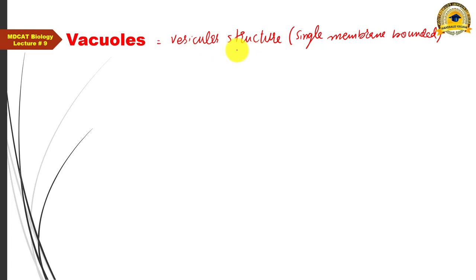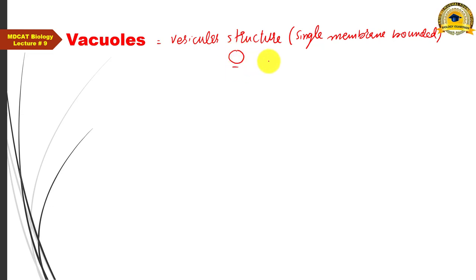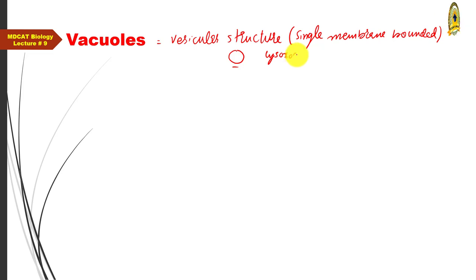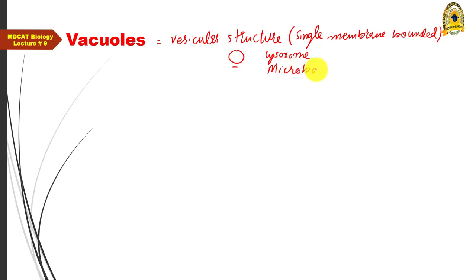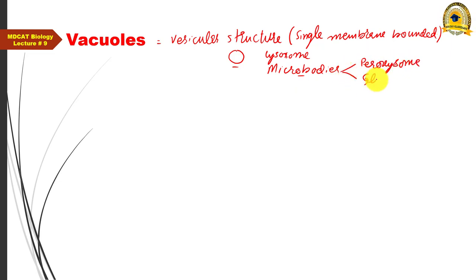Vacuoles are vesicular structures — that is, they are single membrane-bounded structures. These vesicular structures are generally shown as a spherical sac-like structure. In previous lectures, we also discussed other vesicular structures such as lysosomes, and microbodies — which are of two types: peroxisomes and glyoxysomes.